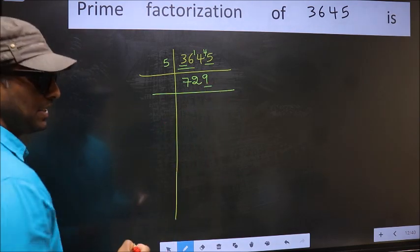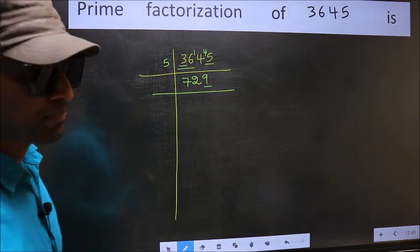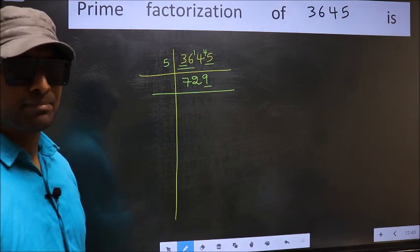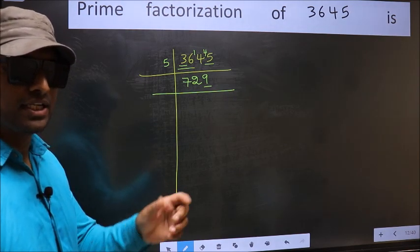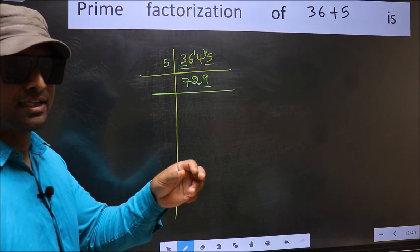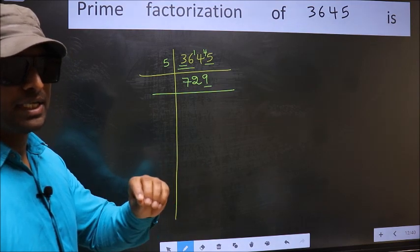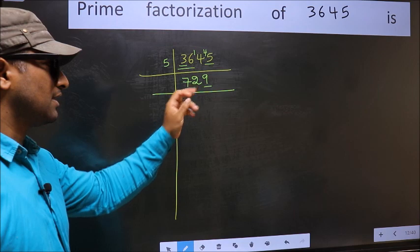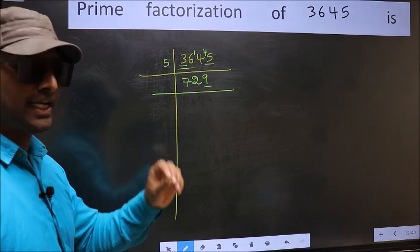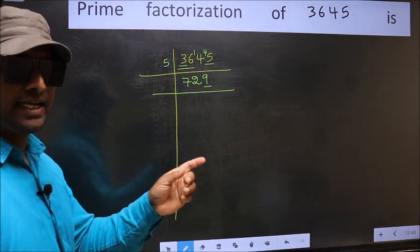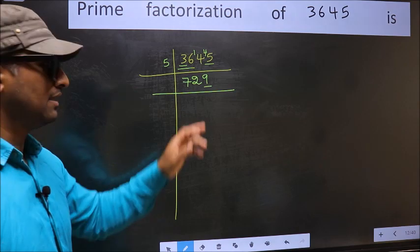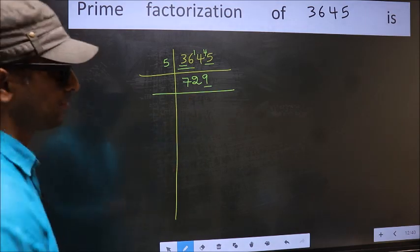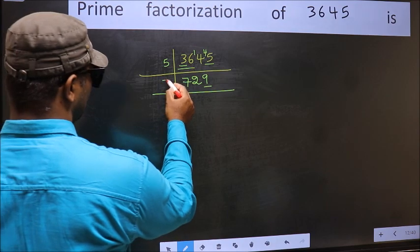Now the last digit is 9, which is not even, so this is not divisible by 2. Next prime number: 3. To check divisibility by 3, we should add the digits. That is 7 plus 2 plus 9, we get 18. And 18 is divisible by 3, so this number is also divisible by 3. So take 3 here.